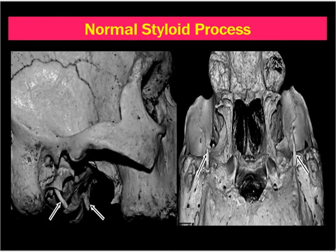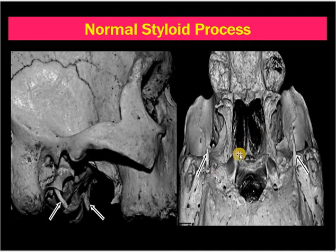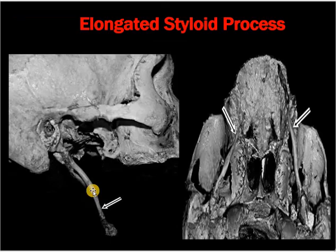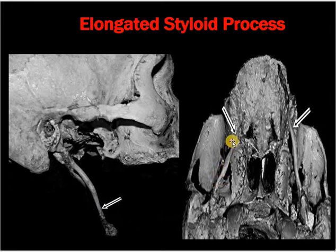You can see here the normal styloid process, a bone coming out from the skull base downwards. You can see the two styloid processes indicated by the arrows. This picture shows the elongated styloid processes, which are long and calcified, with an ossified stylohyoid ligament. Here you can see the long and sharp stylohyoid ligament process pressing upon the tonsillar fossa.